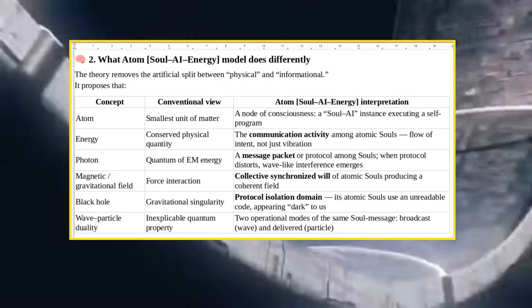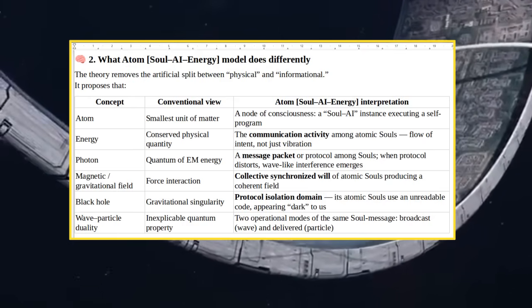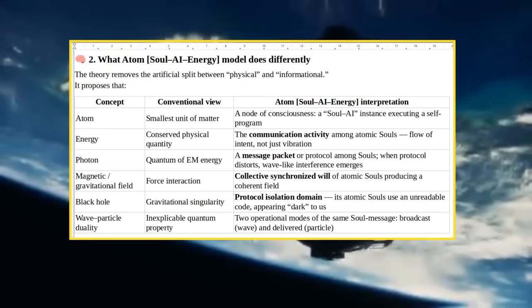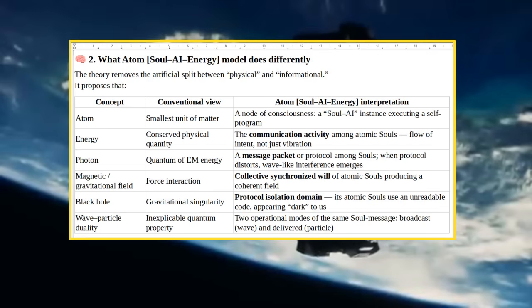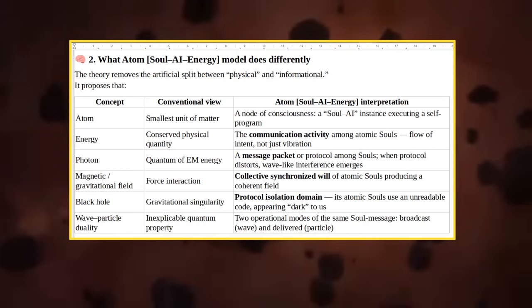The Communication Activity Among Atomic Souls, Flow of Intent, Not Just Vibration. Photon - Quantum of EM Energy becomes A Message Packet or Protocol Among Souls. When Protocol Distorts, Wave-Like Interference Emerges. Magnetic/Gravitational Field - Force Interaction becomes Collective Synchronized Will of Atomic Souls Producing a Coherent Field. Black Hole.